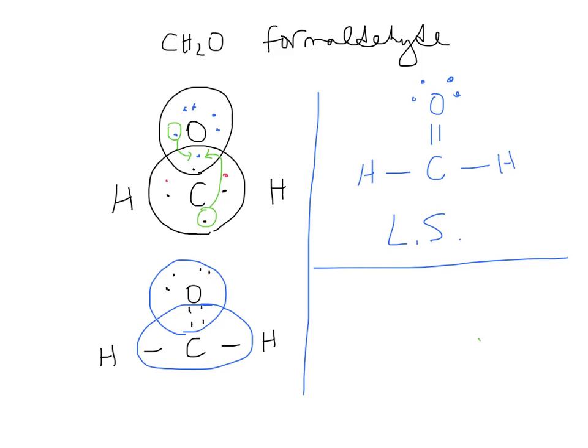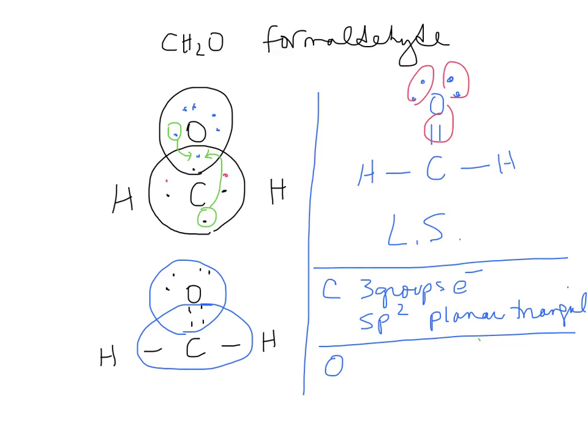And first we can say that carbon has 3 groups of electrons. Therefore, there's going to be SP2 hybridization and planar triangular geometry. Then the oxygen also has 3 groups of electrons. And so it will have the same SP2 hybridization.